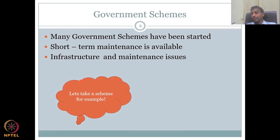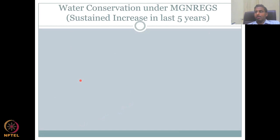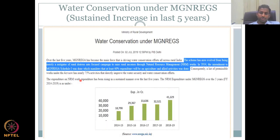Let's take a scheme as an example — I'm not picking on a scheme and saying it is failing or doing better. It is just to show how rural water management could be better if these schemes take all these considerations into account. As I showed in the last lecture, water conservation under MGNREGA has successfully increased in the last five years. The data from 2014 to 2018 shows that from 18,000 crores it more than doubled in five years, going to 41,000 crores — the expenditure spent on water conservation activities under MGNREGA.